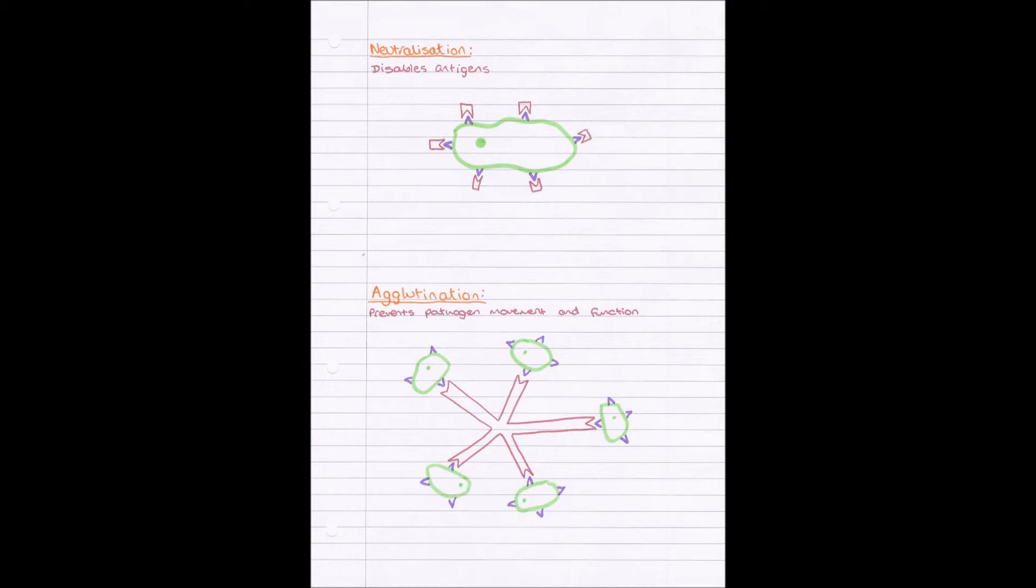Firstly we have neutralization. You can see here on this cell with the green nucleus in the middle, we have our antigens on the cell surface membrane, those purple triangular parts. And then we have our antibodies which are the brown parts. They have the reverse complementary shape to that antigen. Neutralization occurs when all of our antigens on the cell surface membrane have been binded to by an antibody.